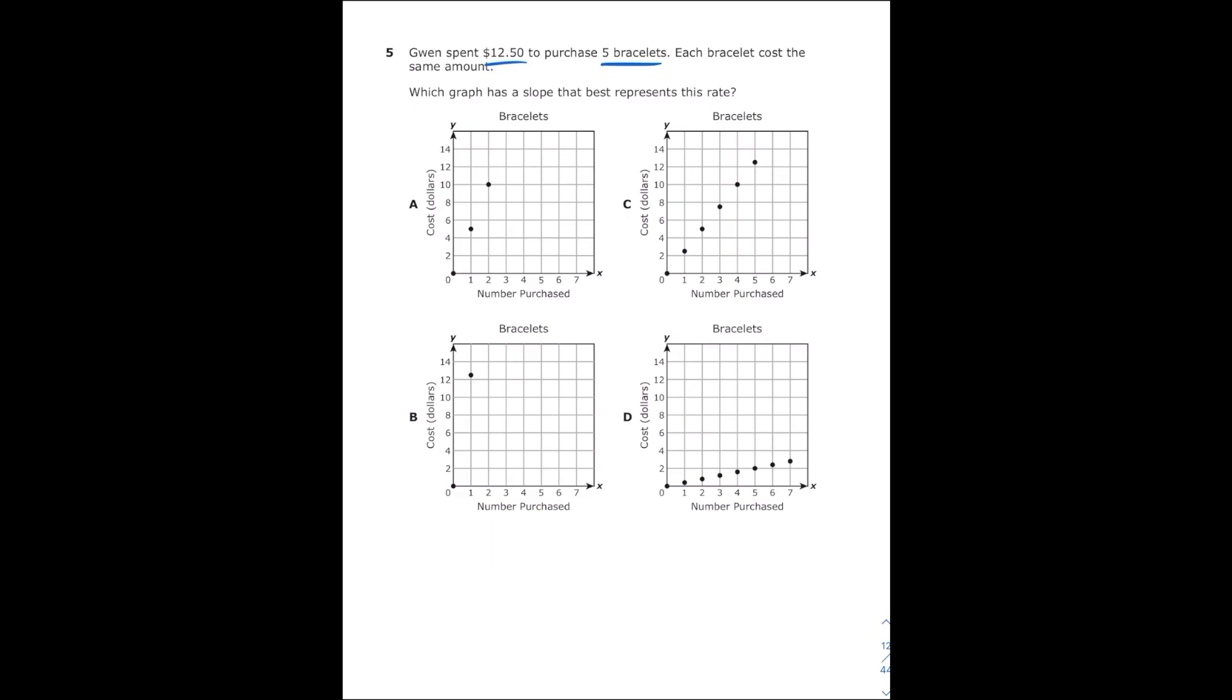So the easiest way to do this kind of problem is just to check each graph and see whenever we purchase five items does it cost $12.50?